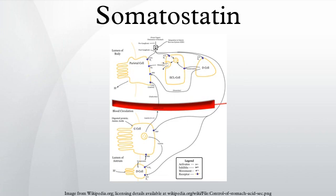Evolutionary History: There are six somatostatin genes that have been discovered in vertebrates. The current proposed history as to how these six genes arose is based on three whole genome duplication events that took place in vertebrate evolution, along with local duplications in teleost fish. An ancestral somatostatin gene was duplicated during the first whole genome duplication event to create SS1 and SS2. These two genes were duplicated during the second whole genome duplication event to create four new somatostatin genes.